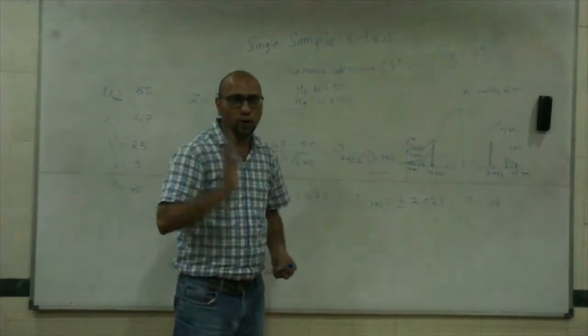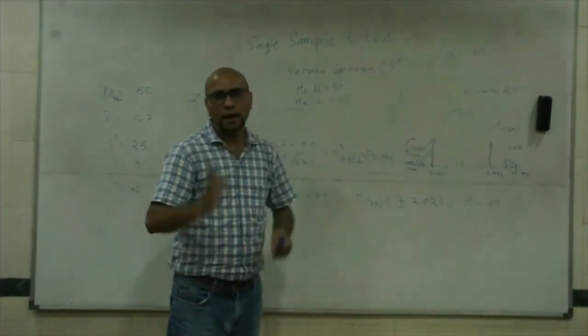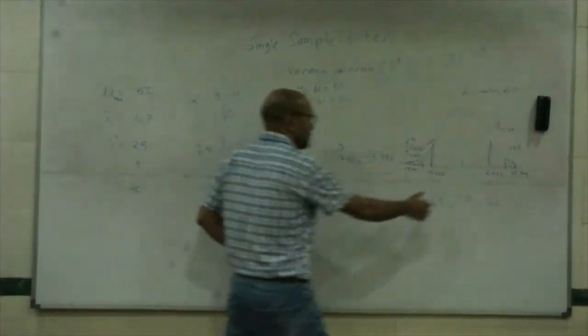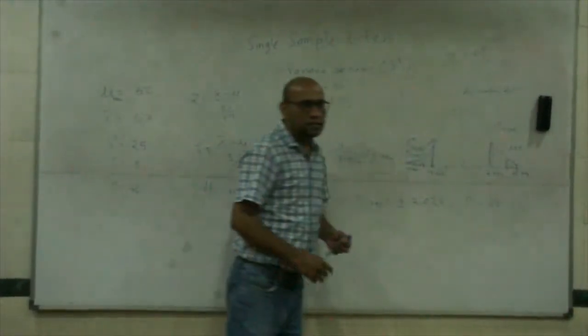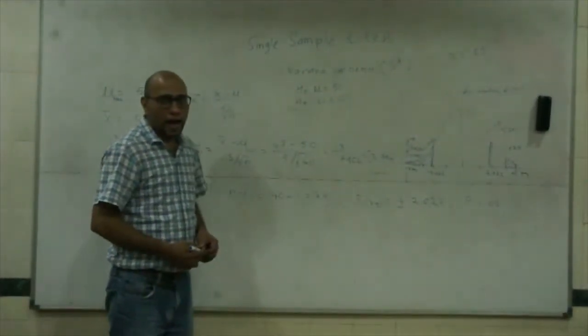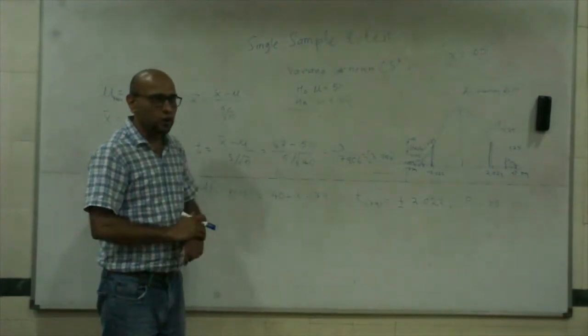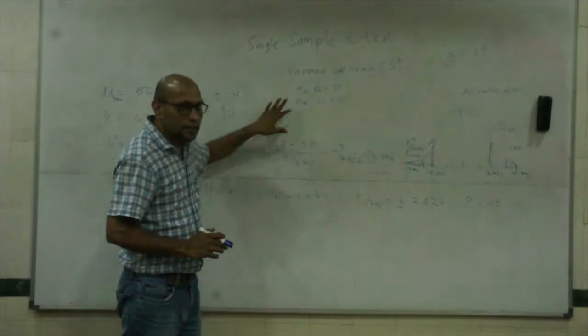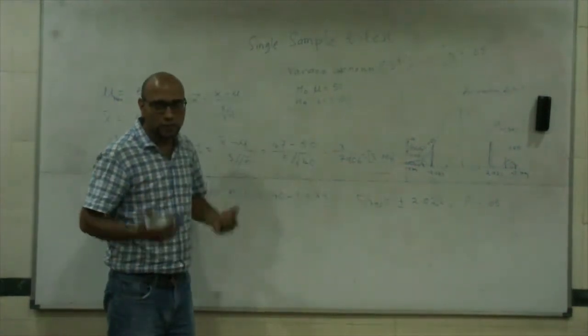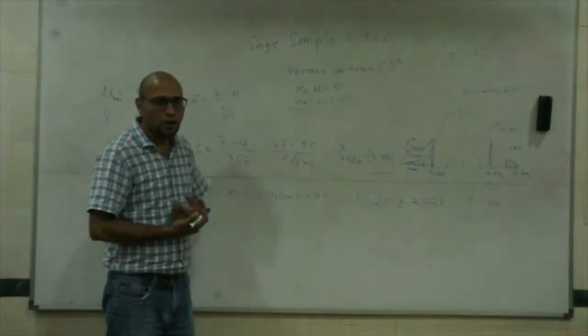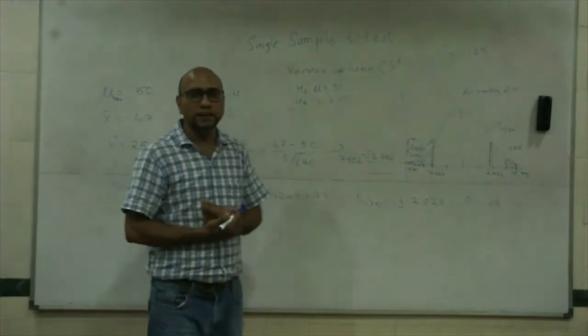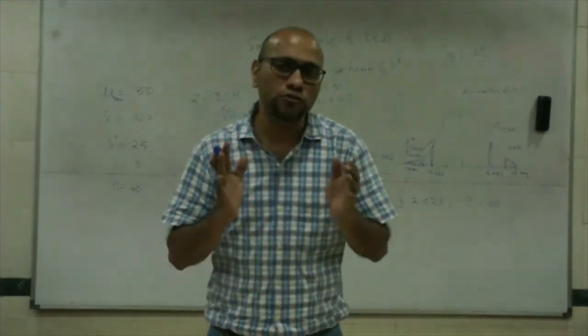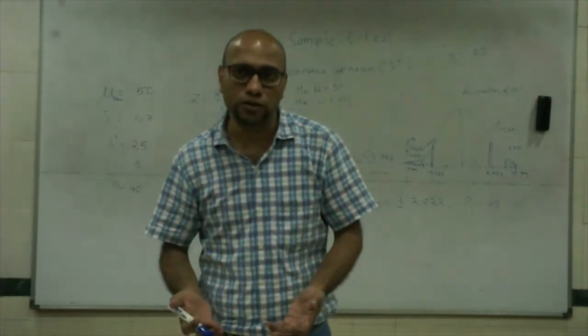There is something called a one-tail test and two-tail test while doing this kind of inference. Suppose I am very sure that for whatever reason, my alternative has a direction. Usually alternatives are directional when we have a theory to make these kinds of predictions.